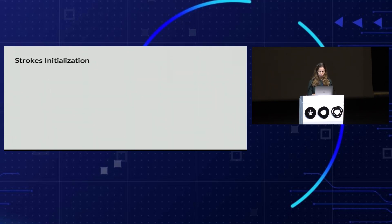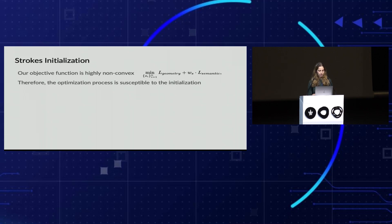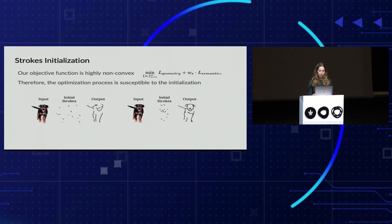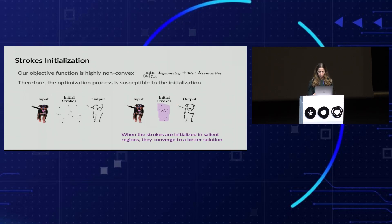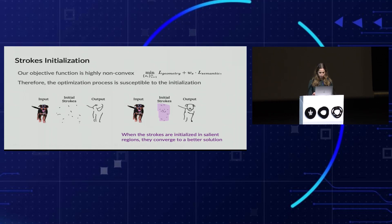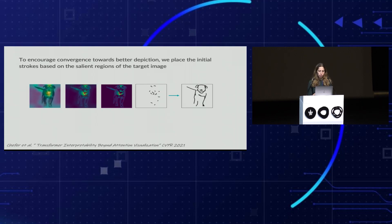The objective function is very complicated and highly non-convex, making the optimization susceptible to initialization. For example, two different initializations on the same dog image show that initialization significantly affects the final output. We observed that when strokes are initialized in salient regions — such as near the dog's face — they converge to a better solution. So to encourage convergence toward better depictions, we place the initial strokes based on the salient regions of the target image.